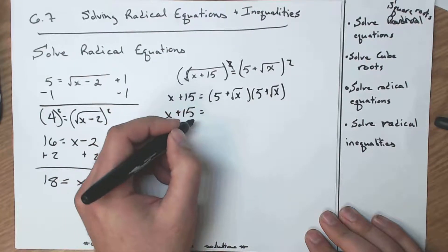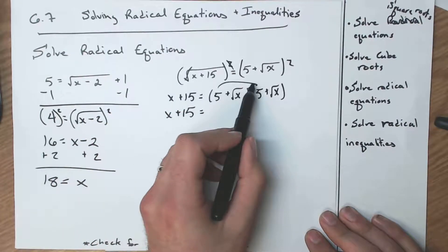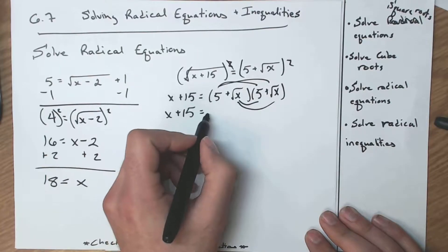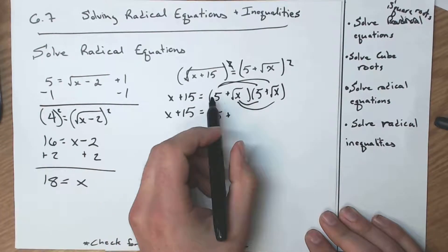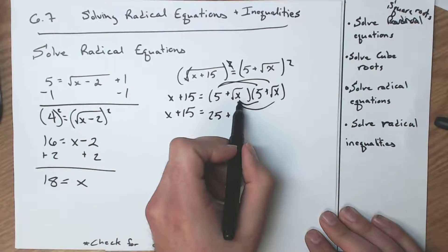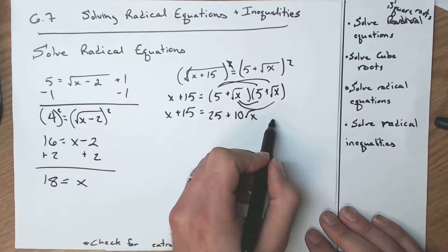x plus 15. I'm trusting you remember how to FOIL. So we have 25 plus, and we have 5 square root of x, and 5 square root of x again. So that's 10 square root of x. Square root of x times square root of x is a straight up regular old x.